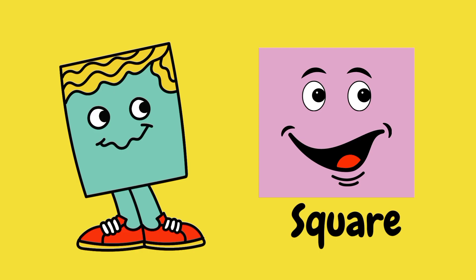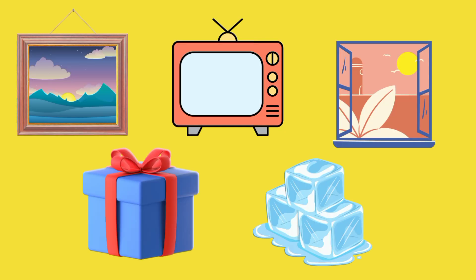It's a square. A square has four corners. All sides of a square are equal. Can you make a list of more things which are in square shape?